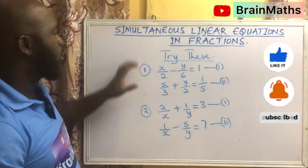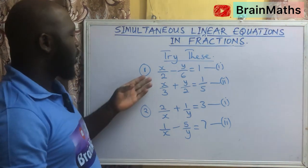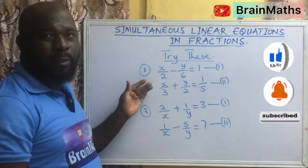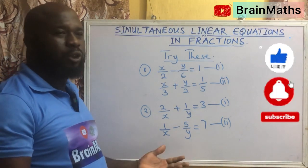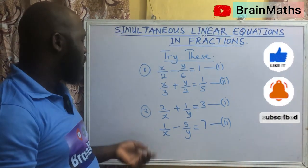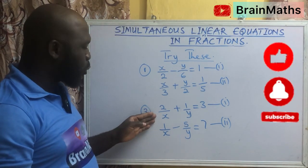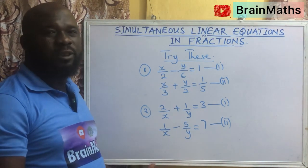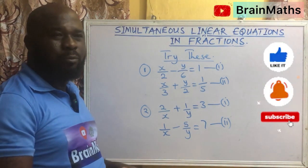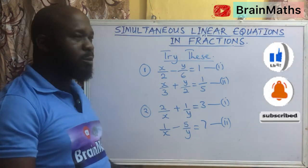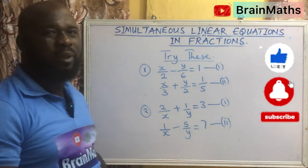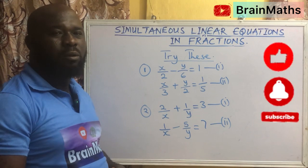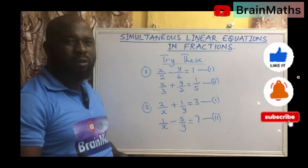I am going to leave you with these two questions on the board. If you look at question number 1, our variables are numerators, so you should know how to go about this question. Go and try to get the values for x and y. And if you look at question number 2, our variables are the denominators, so go through the same process used in the examples given earlier. Try as much as possible to write your answers in the comment section. Don't forget to check back for another video when we release one. Until then, do have a blessed day. Thank you.